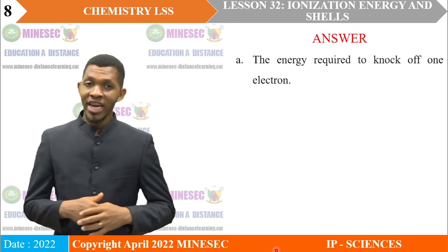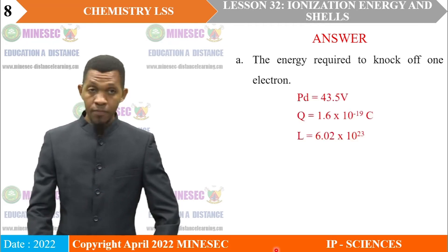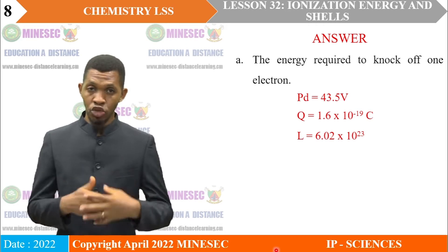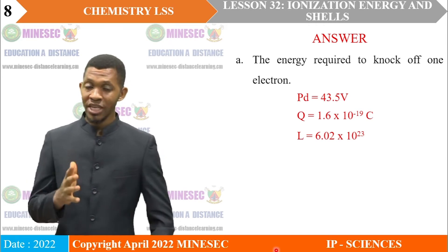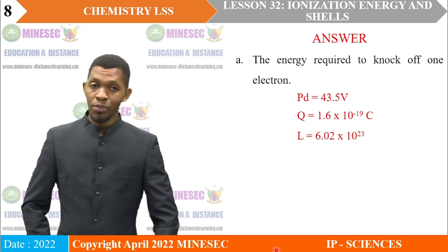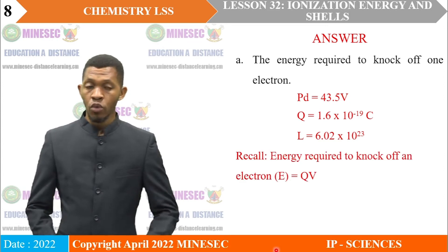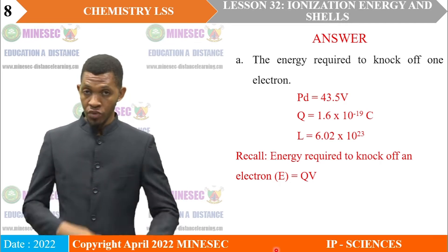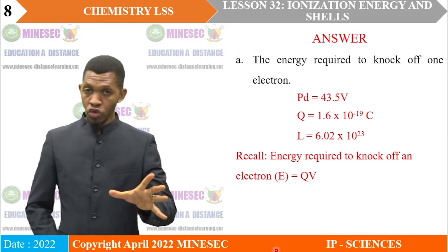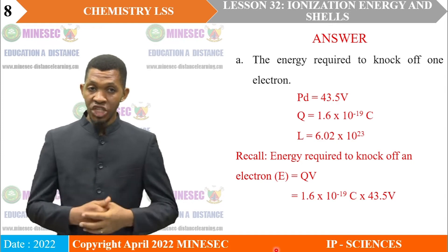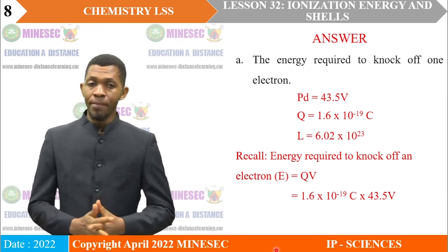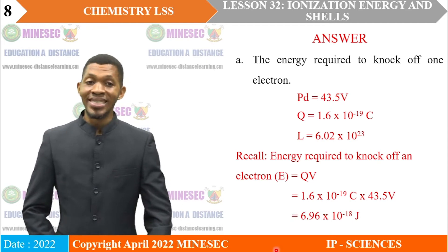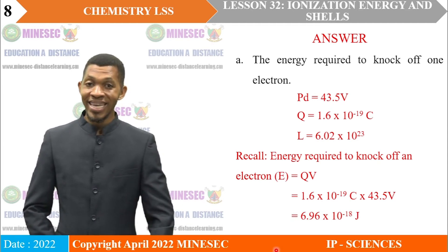The grid voltage given in the question is 43.5 volts, and the magnitude of the charge of an electron is 1.6 × 10⁻¹⁹ coulombs. The Avogadro constant is 6.02 × 10²³. We know that the energy required to knock off an electron, E, is equal to the magnitude of the charge of an electron times the grid voltage. Substituting the values: E = 1.6 × 10⁻¹⁹ C × 43.5 V = 6.96 × 10⁻¹⁸ joules.